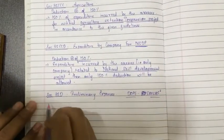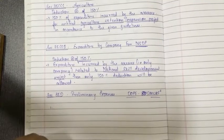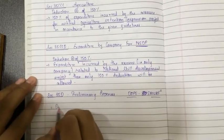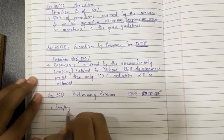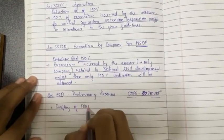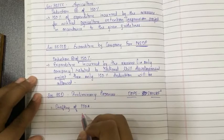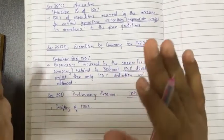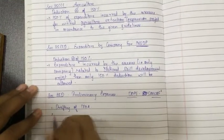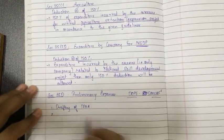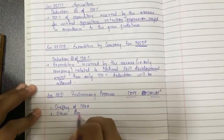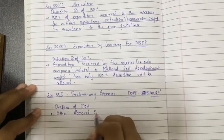D stands for drafting of MOA. I hope MOA is memorandum of association - you know this much, you have read if you have at least studied companies act. What is MOA? Memorandum of association. O stands for other approved expenses. P stands for project report.